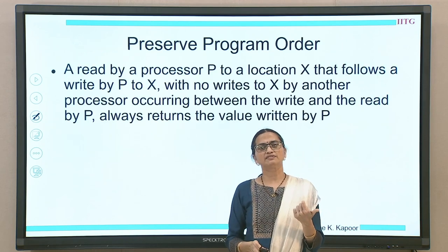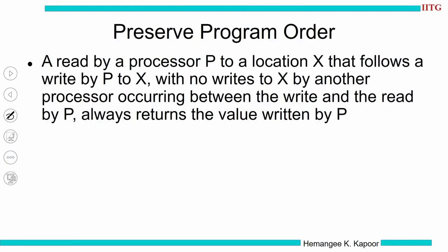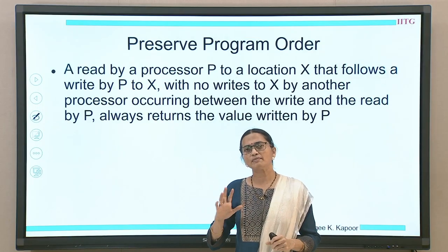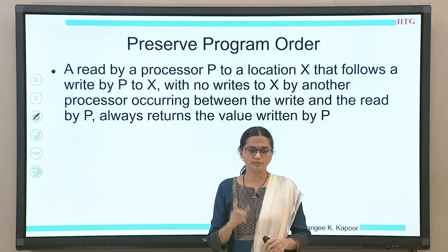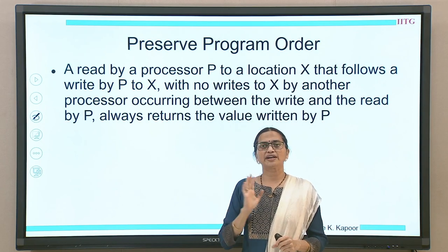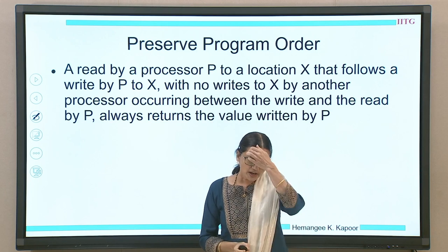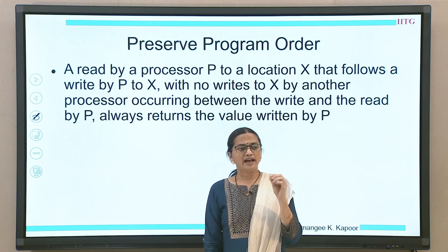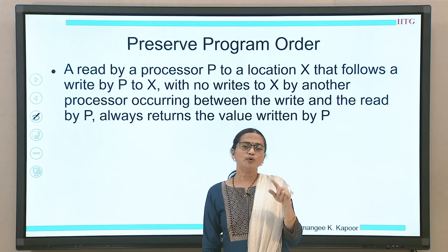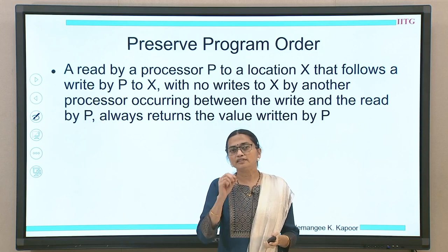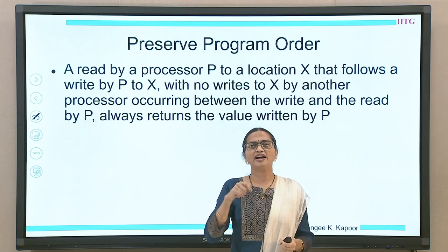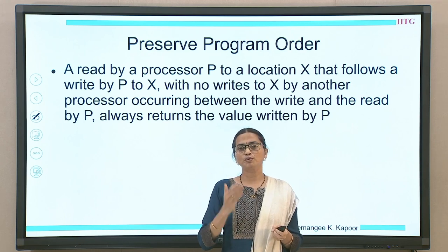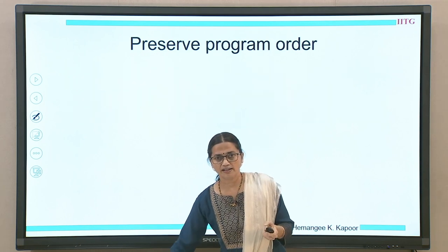The first condition is preserving coherent program order, and this is with respect to a single process. Imagine a uniprocessor setup, or in a multiprocessor setup, assume a single process running on a single processor. Here, if this process reads a memory location x, and this read is following a write by the same processor, then the read should return the same value written by the same process because the process is going to follow its own program order.